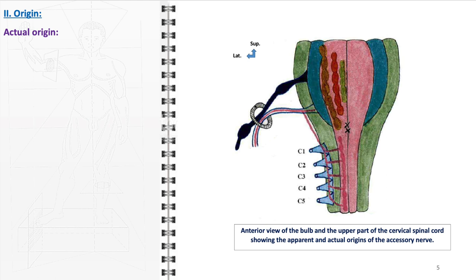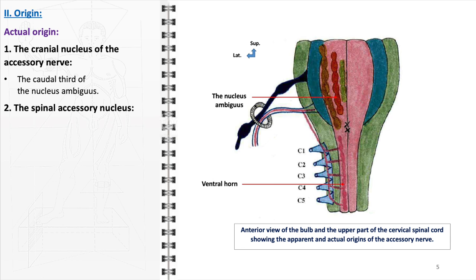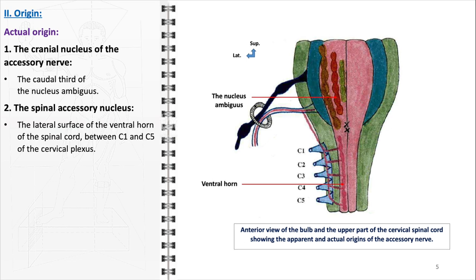The actual origin of the accessory nerve, distinct from its apparent origin, involves two key anatomical regions corresponding to its cranial and spinal divisions. The actual origin of the cranial division is situated in the caudal third of the nucleus ambiguus, within the medulla oblongata of the brainstem, generating the motor neurons that form the cranial part of the accessory nerve. The actual origin of the spinal component is found on the lateral surface of the ventral horn of the spinal cord, spanning from C1 to C5 segments, containing motor neuron cell bodies that give rise to the spinal part of the accessory nerve.